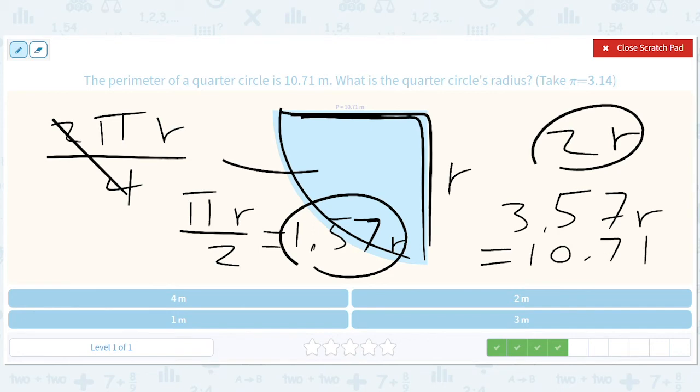And we can probably guess the answer here, right? Because I mean, it feels like it's 3, right? 3 times 3 is 9, you got some left over, right? So it's 3. In other words, you're dividing 10.71 by 3.57 to get 3.